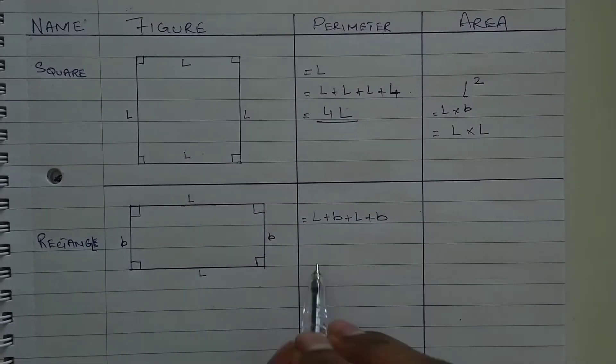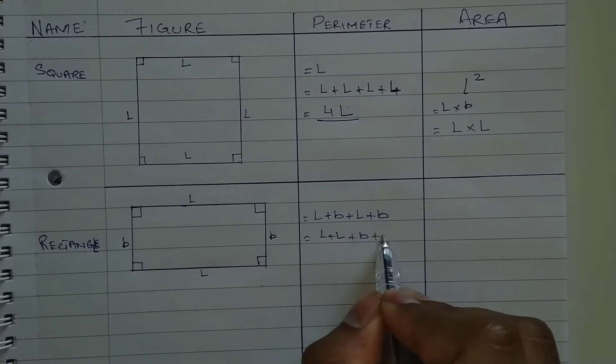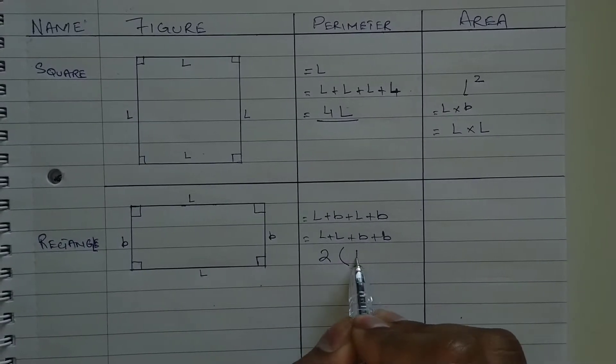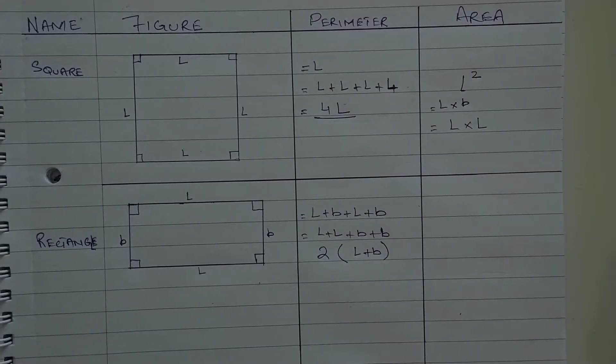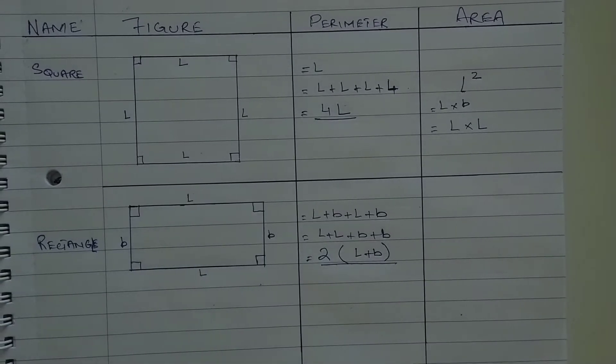Simplifying this, it becomes length plus length plus breadth plus breadth. We have two lengths and two breadths. So formula for calculating perimeter of a rectangle is 2 multiplied by length plus breadth.